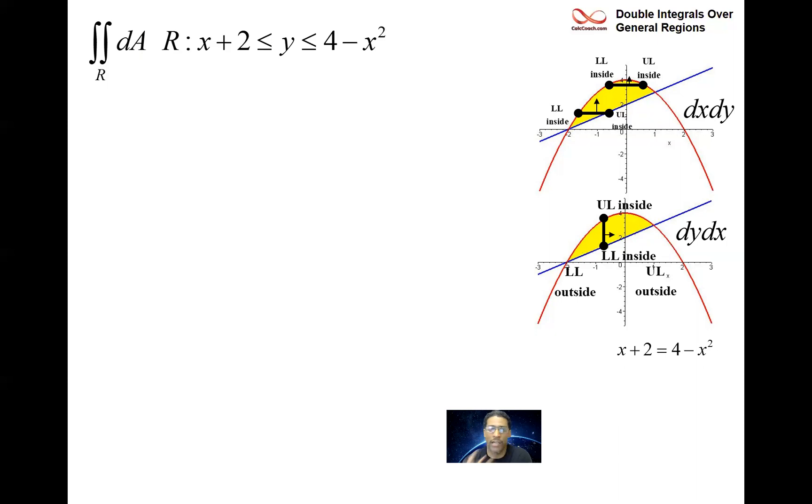Just a quadratic. We'll have x squared plus x minus 2. Factors nicely. x plus 2, x minus 1, set them separately equal to 0, you'll get x is negative 2 or x is positive 1. Okay, great. So those will be your outside bounds.